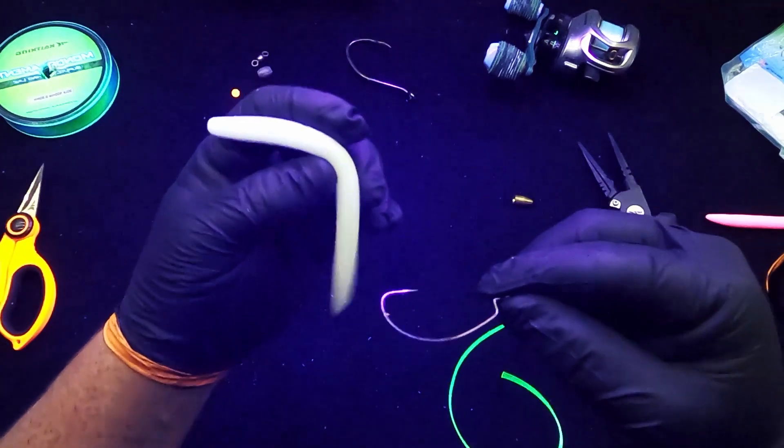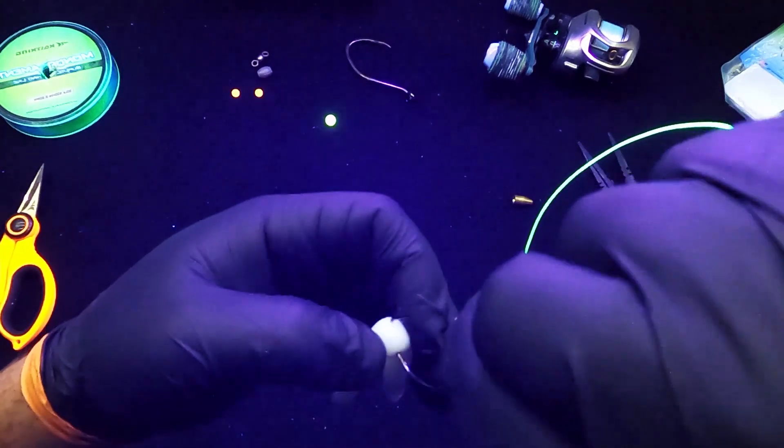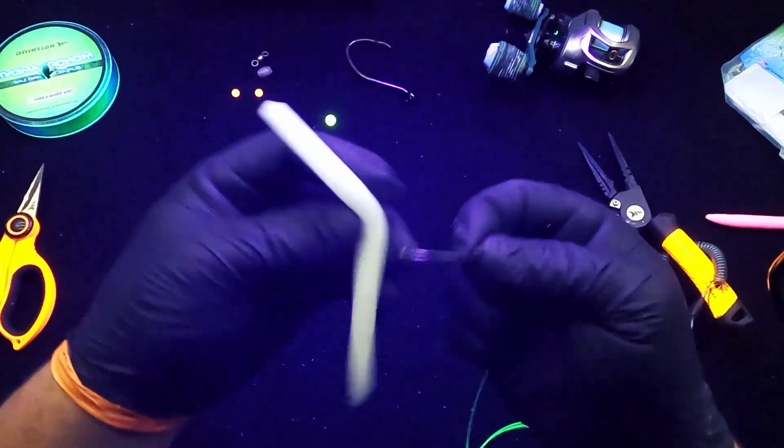You take your worm or whatever bait you choose to use and you simply put it right through the middle of the hook. There it is. It's that easy.